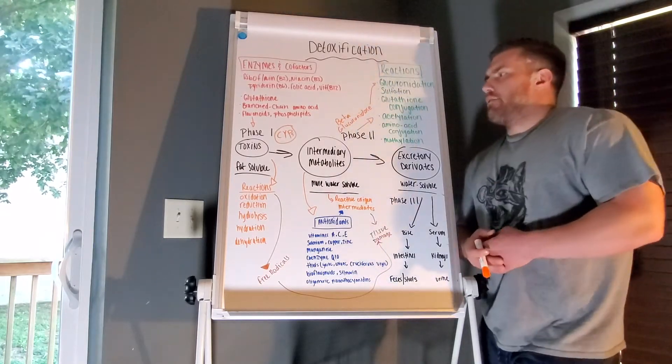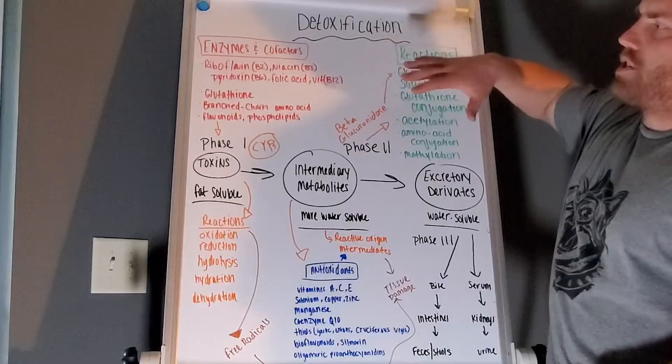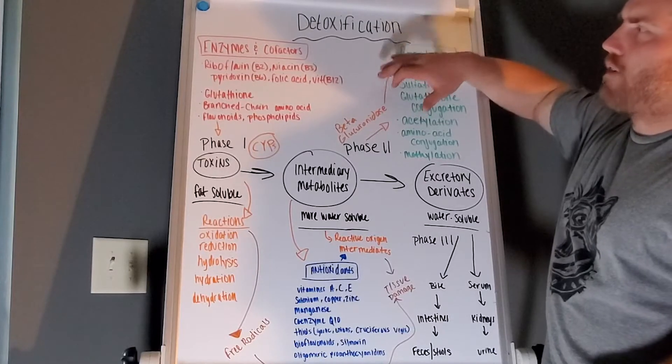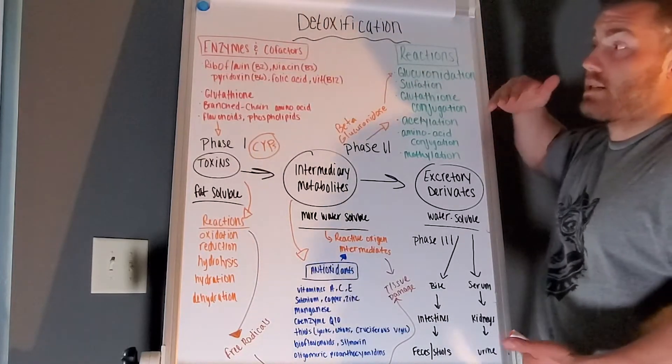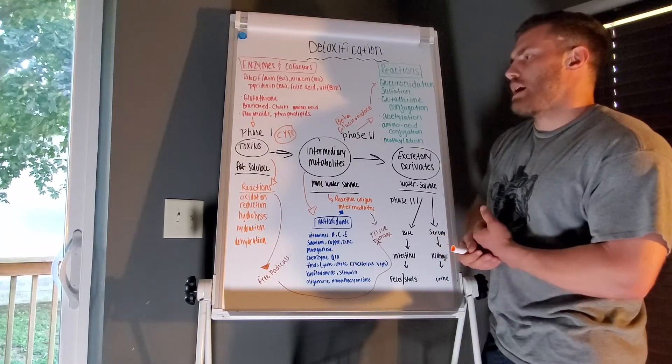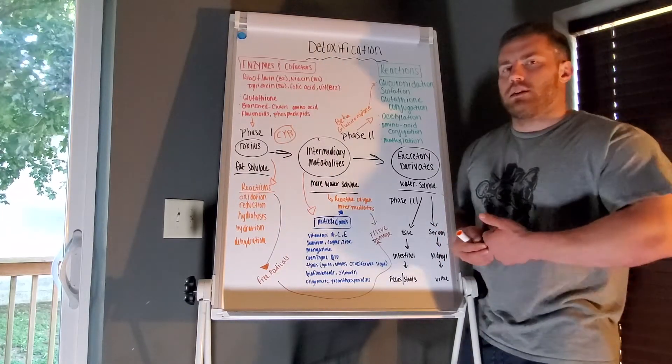Kind of a recap: we have our three main phases here. Each phase has some cofactors, nutrients, enzymes, things that are required. Each phase is just trying to further break down these compounds and toxins into more easily excretable forms.